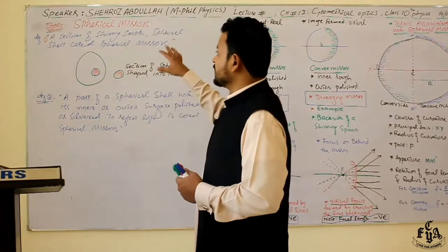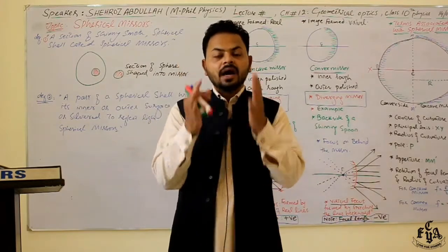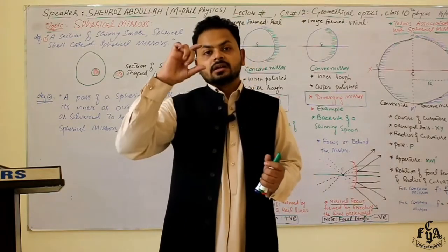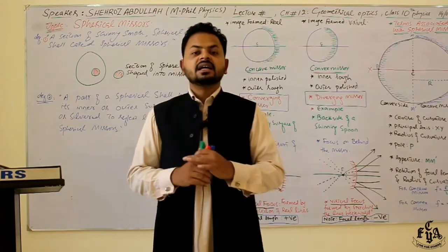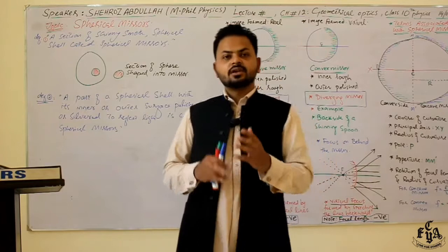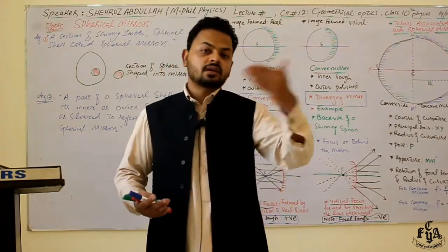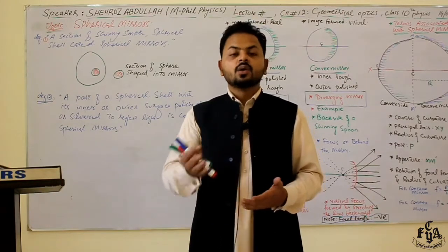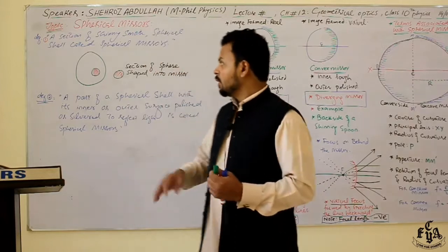Today we are going to start with spherical mirrors. Spherical mirrors are the part of a shiny spherical shell. We can also say that the section of a hollow spherical shell is known as spherical mirrors. The section of a hollow spherical shell whose inner or outer part may be polished or silvered for reflection of light is known as spherical mirrors.